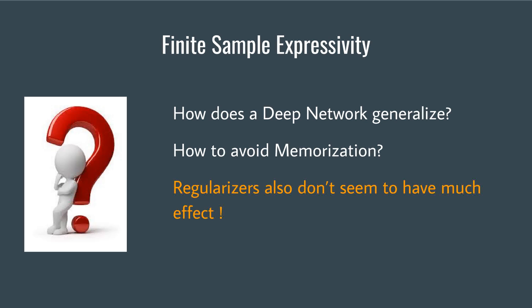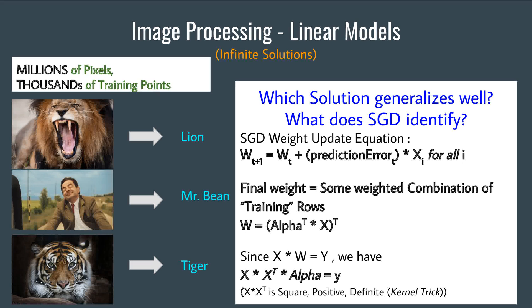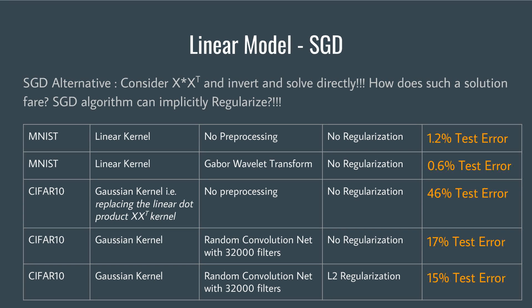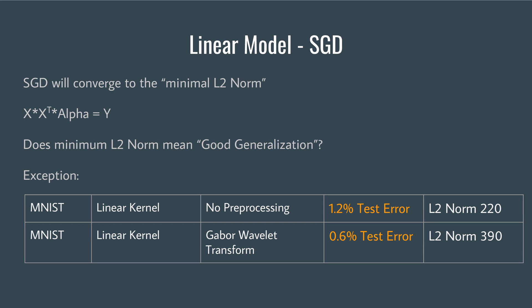From where do deep networks get their generalization performance? Consider image processing using linear models. Since the input dimensions are much greater than the training samples, linear algebra suggests infinite solutions — the question is which one generalizes well. An analysis of SGD shows that what it achieves is equivalent to the kernel trick, and SGD itself can be seen as implicitly regularizing. Results on benchmark datasets show that SGD converges to the minimal L2 norm solution, which seems to generalize well, but minimum norm alone does not explain everything, as seen in a counter example.